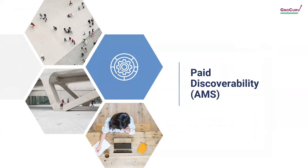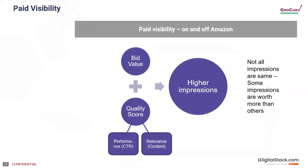Finally, let's talk about paid discoverability — the beast in the room. How does Amazon make money? Amazon makes money when a customer clicks on an ad — not just when they show an ad. So it's important for them to show ads with a high quality score. They also make more money when someone bids higher, so it's a combination of both: bid value and quality score. If you're willing to bid 500 rupees for a keyword but your quality score is really low, you're not getting clicks and Amazon doesn't make any money — so they'll prioritize a competitor with a lower but more effective bid.